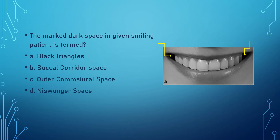The next question asks about the marked dark space visible in a smiling patient. The options were black triangles, buccal corridor space, outer commissural space, or Lismer space. The answer is that it is called the buccal corridor space.